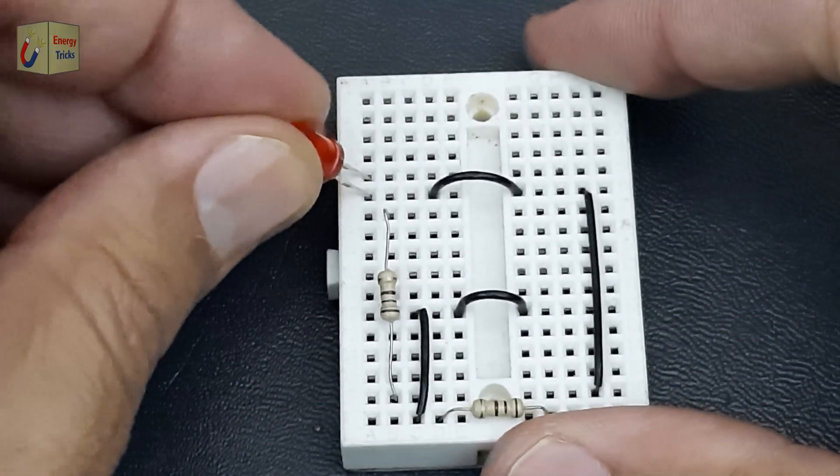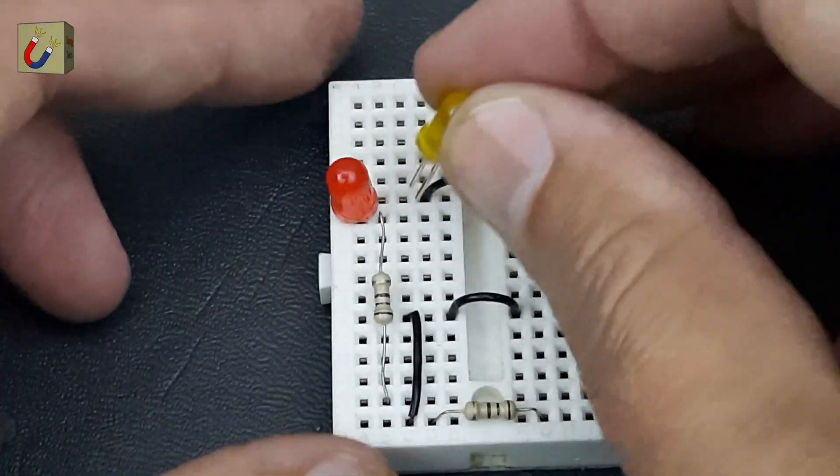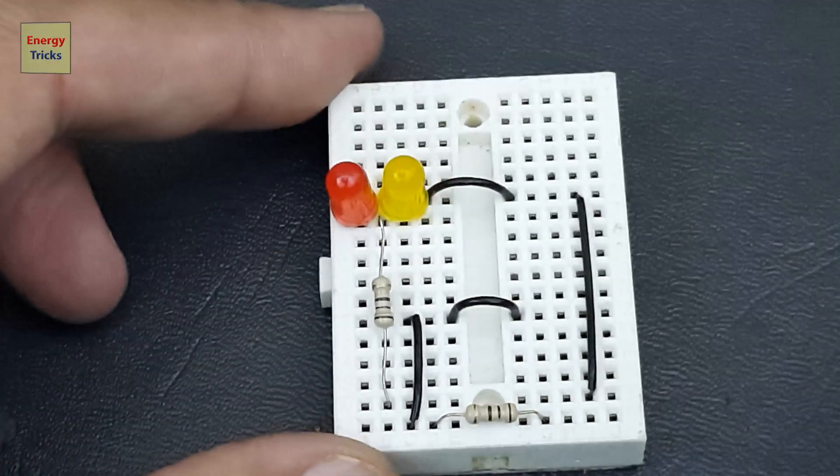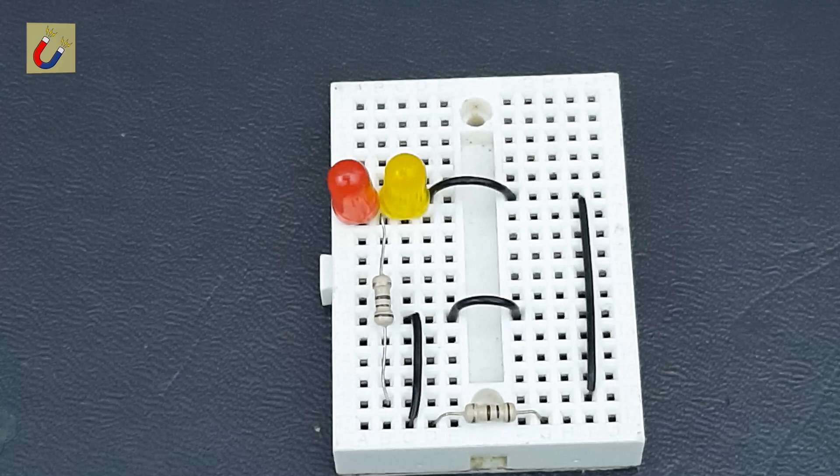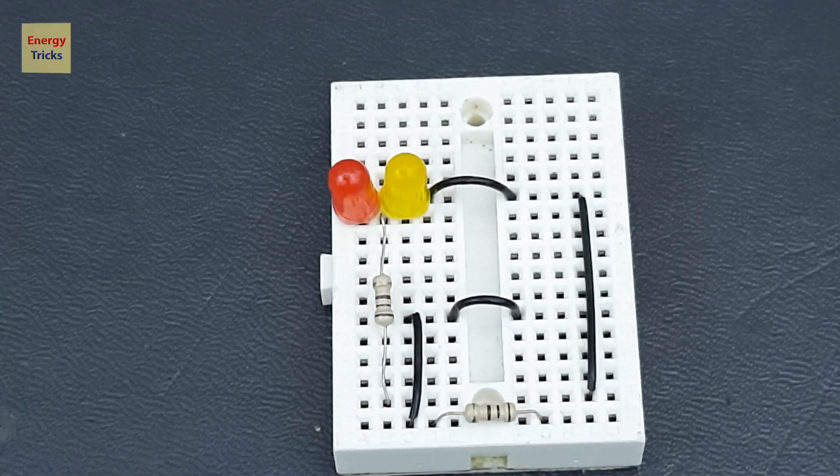After that, carefully insert two LEDs into the breadboard, ensuring their legs' pins are correctly aligned. Connect the negative pins, cathodes, of both LEDs to the 100-ohm resistor, which acts as a current limiter to protect the LEDs.